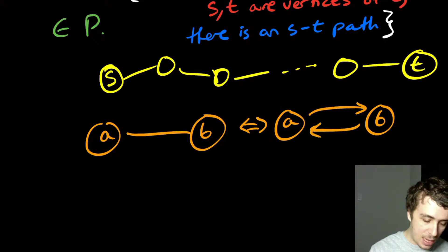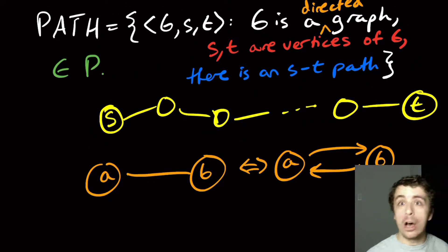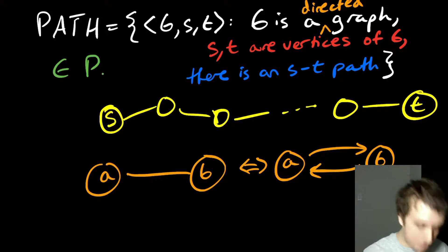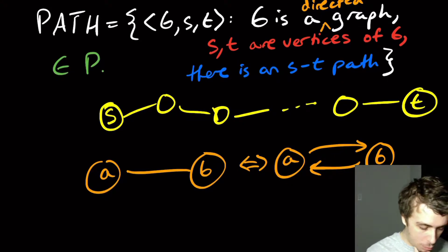But I have an edge that goes both ways. So if I talk about the directed version, that automatically includes the undirected version because I can just convert the undirected one into an equivalent directed one and we are done. So now I want to talk about the path problem.